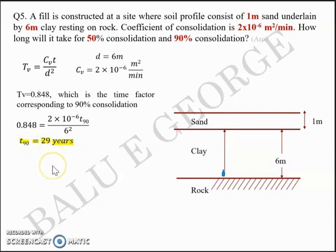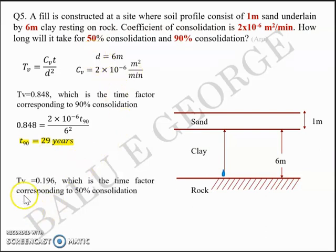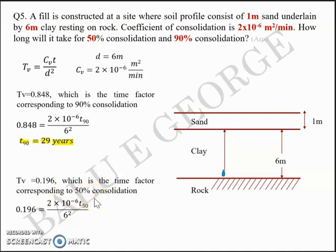Similarly, for 50% consolidation the time factor is Tv = 0.196. Substituting gives T₅₀ = 6.7 years. These time factor values — Tv = 0.848 and Tv = 0.196 — are the ones discussed during the logarithm of time fitting method and the root of time fitting method.